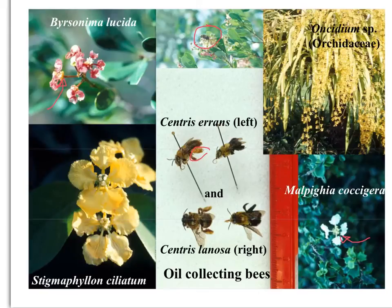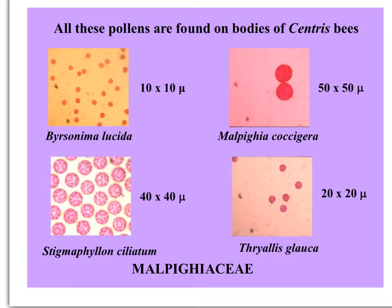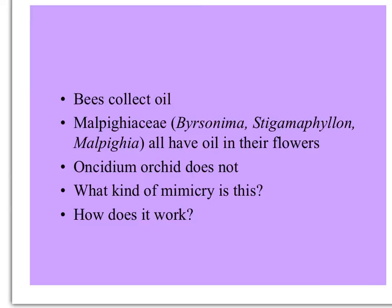But there's another group of plants — Oncidium orchids — that offer no reward but are still visited by these bees. If you catch these bees, they carry pollen from all the different Malpighiaceae: Byrsonima lucida, Stigmaphylon, Malpighia coccigera, and even Thrialis glauca. All of these have similar pollen but of different sizes, so you can distinguish them. In this system the bees collect oil from the Malpighiaceae flowers, which all have oil, while the Oncidium orchids do not.